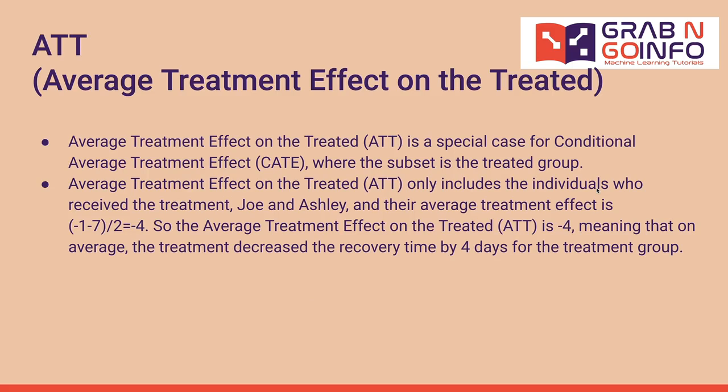Conditional Average Treatment Effect helps us to find the heterogeneity between subsets of the population. Average Treatment Effect on the Treated is a special case for conditional average treatment effect, where the subset is the treated group. It only includes the individuals who received the treatment, Joe and Ashley, and their average treatment effect is minus 4. So the average treatment effect on the treated is minus 4, meaning that on average, the treatment decreased the recovery time by 4 days for the treatment group.